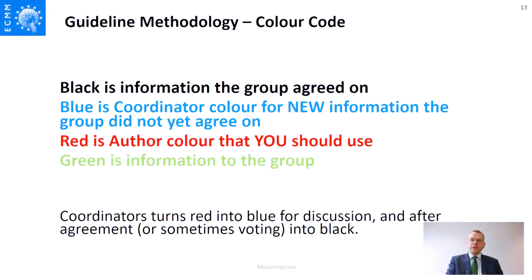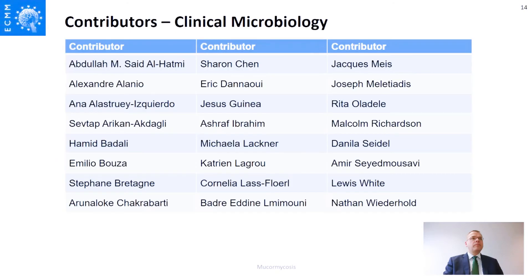Once things have been discussed and the group has agreed on a letter, a number, and — for level 2 evidence — an index for the strength of recommendation and quality of evidence, the guideline coordinator converts blue into black. Black indicates finalized, agreed-upon content. If new evidence emerges, black can be reopened for discussion, though we don't expect this to happen often.